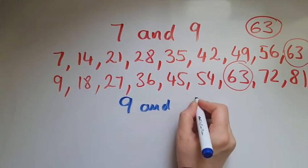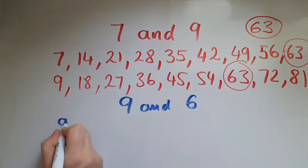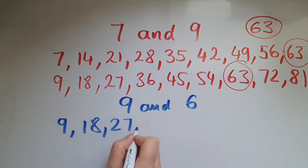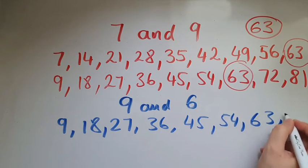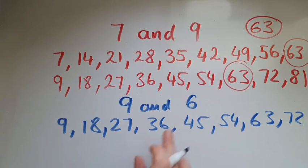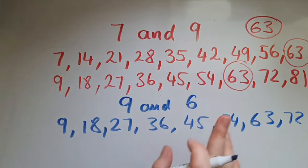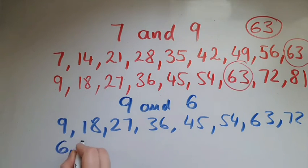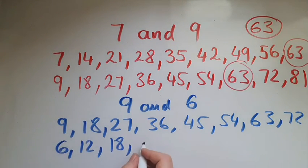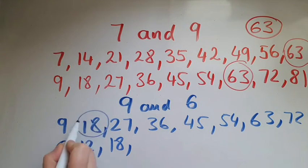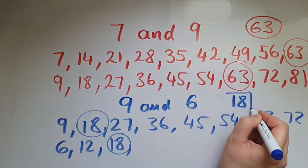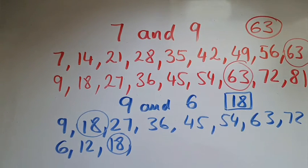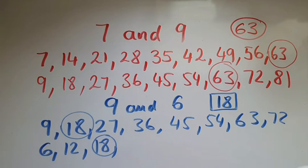Let's find the lowest common multiple between 9 and 6. Start with 9: 9, 18, 27, 36, 45, 54, 63, 72. Now the multiples of 6: 6, 12, 18 — I can see 18 here already, so I don't need to continue any further. So 18 is the lowest common multiple between 9 and 6. You've probably thought this is quite easy, and it is.